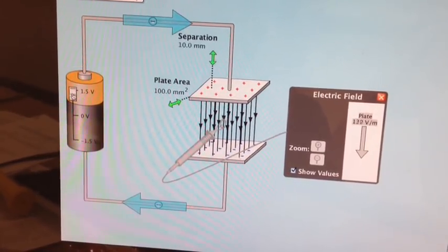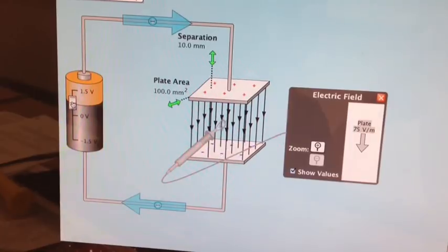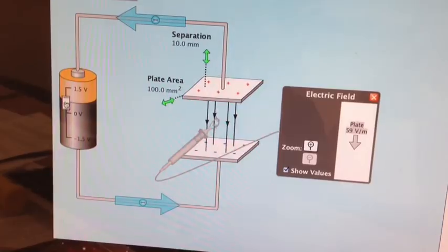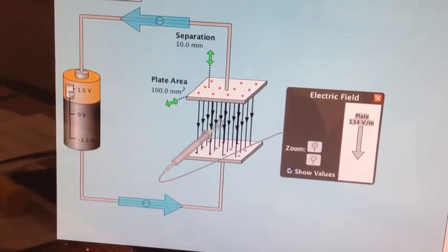When I lower the voltage, however, you can see the lines get farther apart. So more voltage would give you a stronger field, and less voltage would give you a weaker field.